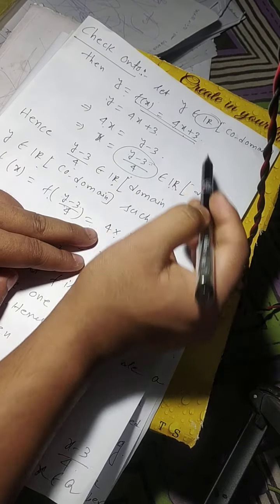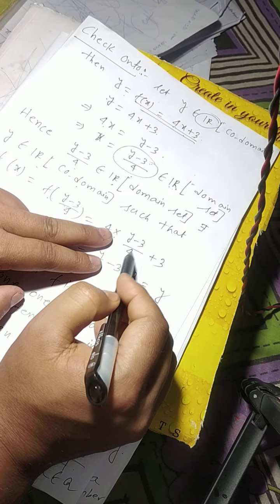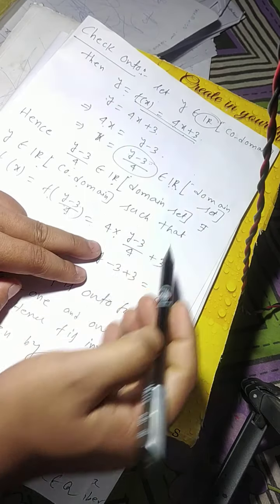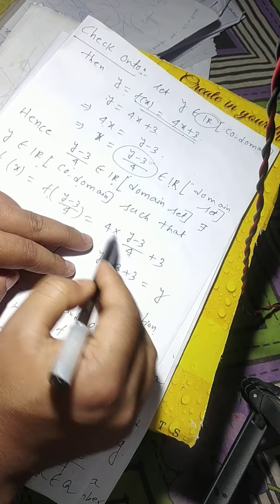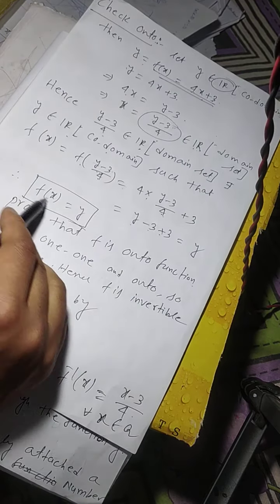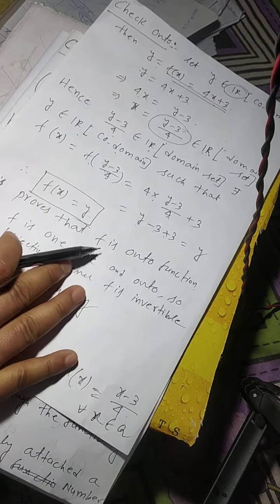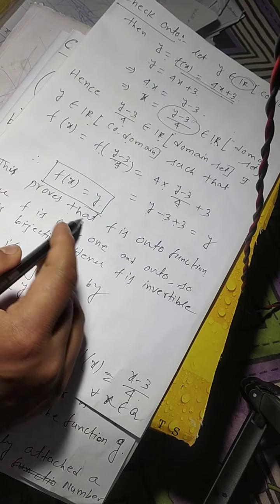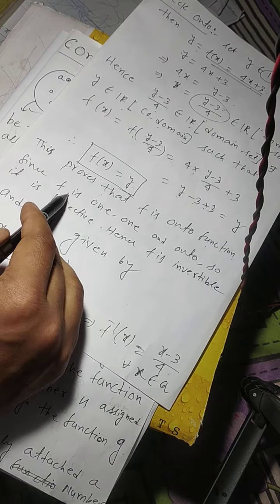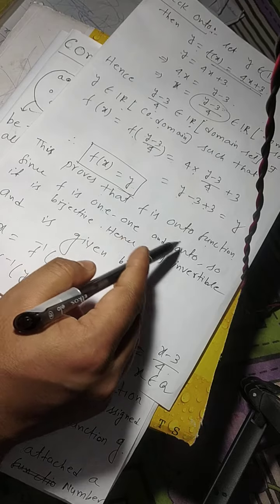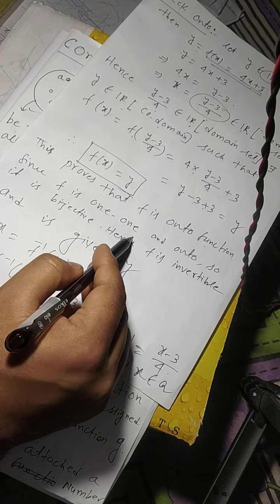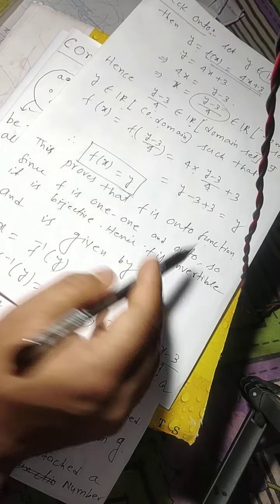So f of x equals 4 into (y minus 3)/4 plus 3, the 4 cancels, giving y minus 3 plus 3 equals y. So f of x equals y. This proves that f is onto. Hence f is one-one and onto, so it is bijective. Hence it is invertible.